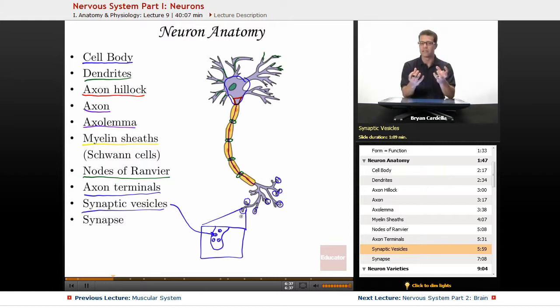And when they're stimulated, they then fuse with the end of that axon button. And they end up dumping these little neurotransmitters into the synapse.